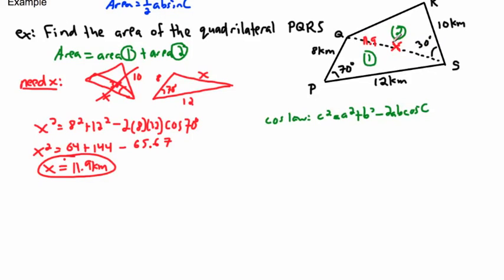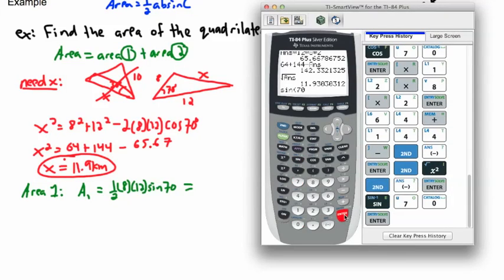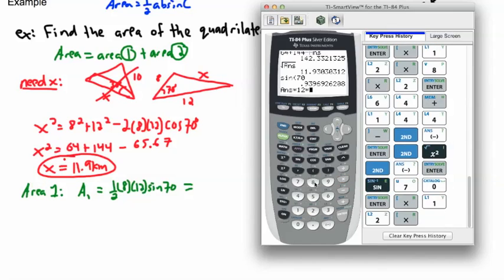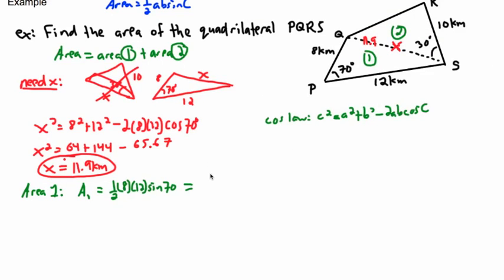Now that x = 11.9, we can calculate both areas. Area 1: A1 = one-half × 8 × 12 × sin 70°. Computing this on the calculator — sin 70° times 12 times 8 divided by 2 — gives A1 ≈ 45.1 kilometers squared.